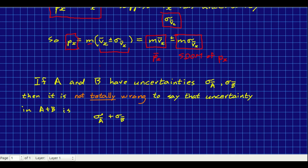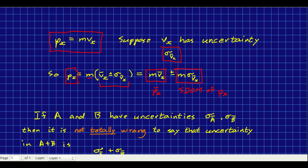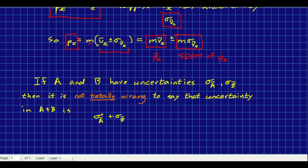What we actually need is a system momentum so we now need to add the momentums of two different carts. So I'm going to say we need an addition rule. If we have any old quantities a and b with uncertainties sigma a bar and sigma b bar, then it's not totally wrong to say that the uncertainty in the sum a plus b is just the sum of those two uncertainties.